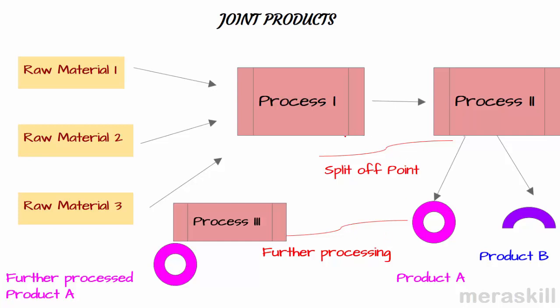So what are joint products? Joint products are products which come out of a common process. One or more common processes when you get two or more products, they are called joint products. And our problem is in how to apportion the joint processing cost to product A and product B.